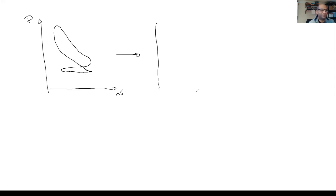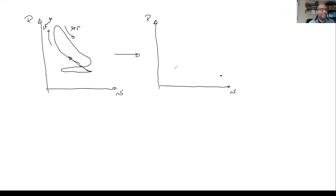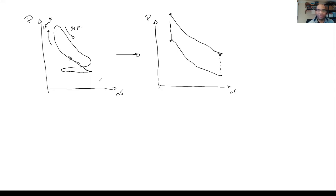We said: what are the basic features of this? There's compression, then combustion, then expansion and exhaust and intake. We then said: let me fix the initial state and separate these processes entirely. We idealize the process — we have pure compression, heat addition, and in the case of the Otto cycle, heat addition is at constant volume, then expansion, and then a little process that disregards the exhaust and intake.